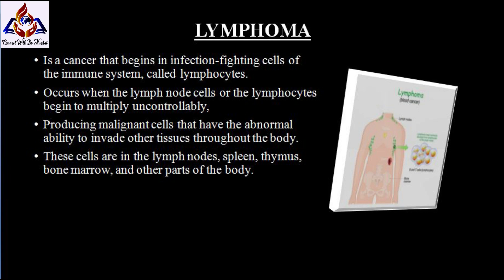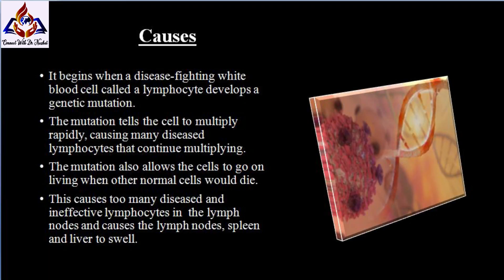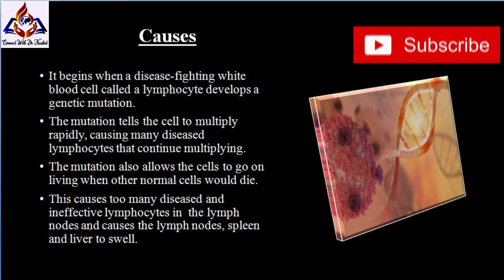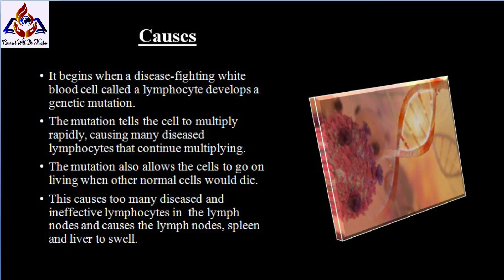When you have lymphoma, lymphocytes change and grow out of control. The causes of lymphoma: it begins when a disease-fighting white blood cell called a lymphocyte develops a genetic mutation. The mutation tells the cell to multiply rapidly, causing many diseased lymphocytes that continue multiplying. The mutation also allows the cells to go on living when other normal cells would die, causing too many diseased and ineffective lymphocytes in your lymph nodes.